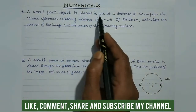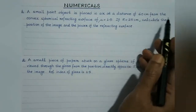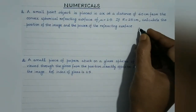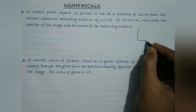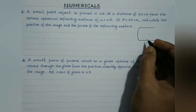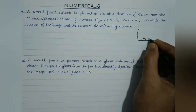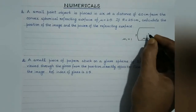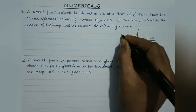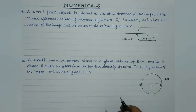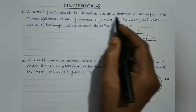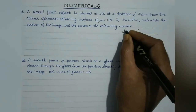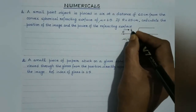A small point object is placed in air at a distance of 60 cm from the convex spherical refracting surface of refractive index 1.5. This is a convex refracting spherical surface; the refractive index of the denser medium mu2 is given to be 1.5, and that of air, mu1, is 1. This will be the pole and this will be the center of curvature. The line joining P and C will be the principal axis. The object is placed in air at a distance of 60 cm — suppose this is where the object is placed, so this will be the direction of the incident ray.